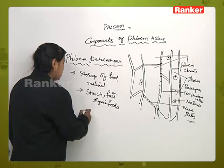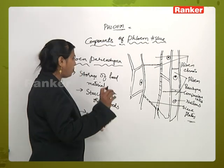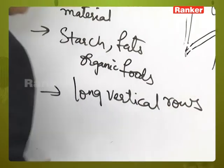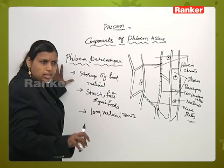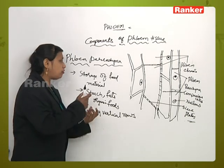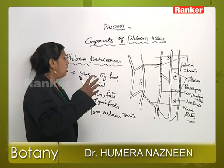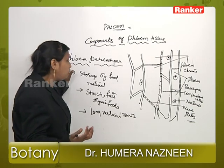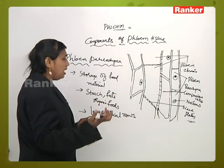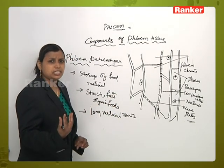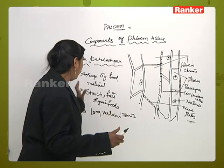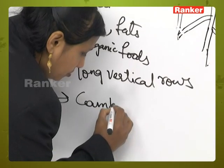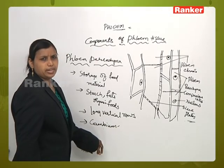The cells of phloem parenchyma are oriented in long vertical rows. The arrangement of phloem parenchyma is more or less similar to that of primary phloem. Phloem parenchyma may also help in the storage of food material for both companion cells and albuminous cells. These parenchyma cells of phloem originate from the cambium.